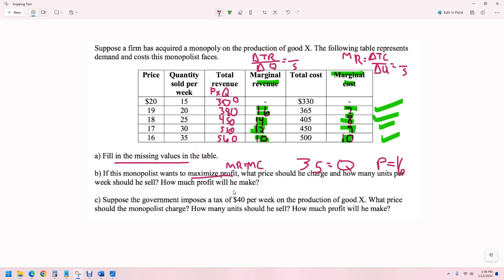How much profit will they make? We're just going to compare total revenue with total cost: 560 minus 500, that's 60.